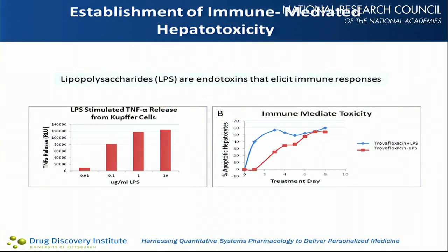We've also established an immune-mediated hepatotoxicity model. LPS increases TNF-alpha from the Kupffer cells. In an immune-mediated toxicity assay measuring apoptosis, combining trovafloxacin with LPS produces a very rapid and dramatic immune response. Trovafloxacin alone will also induce immune-induced hepatotoxicity, but at a lower level and rate than when combined with LPS.